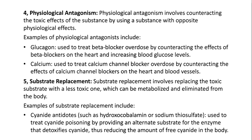Physiological antagonism involves counteracting the toxic effects of the substance by using a substance with opposite physiological effects. Examples of physiological antagonists include Glucagon, used to treat beta-blocker overdose by counteracting the effects of beta-blockers on the heart and increasing blood glucose levels.